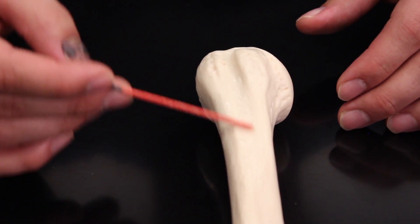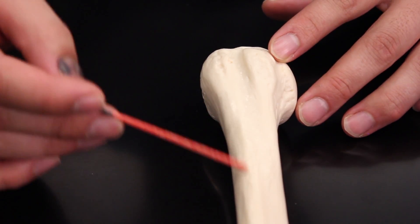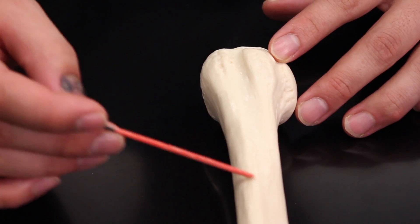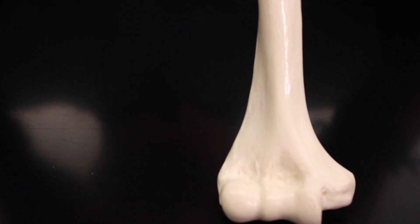And then if I move right here, this is the deltoid tuberosity, it's this roughened surface right there, it's where the deltoid inserts. Now what I'm going to do is pull this back here so you guys can see this.